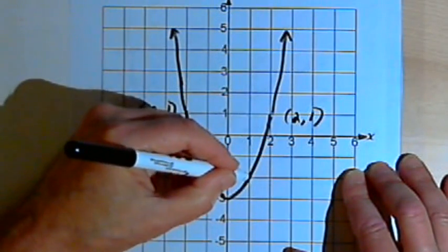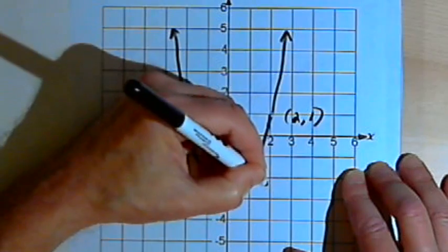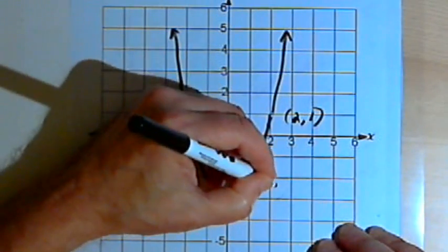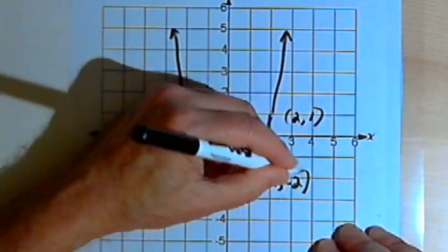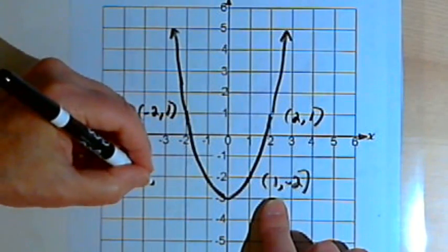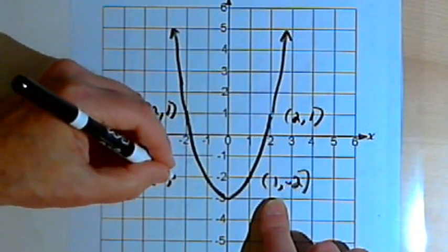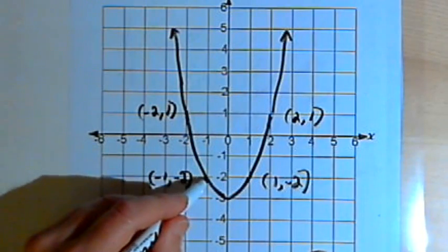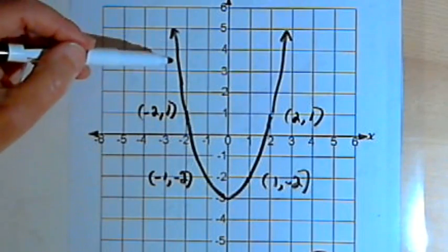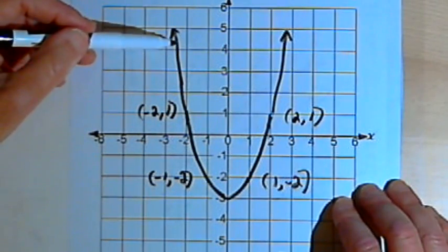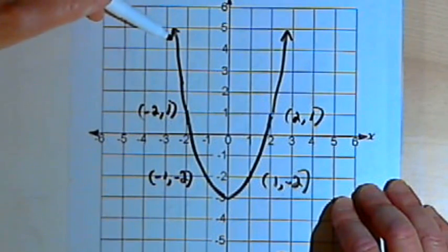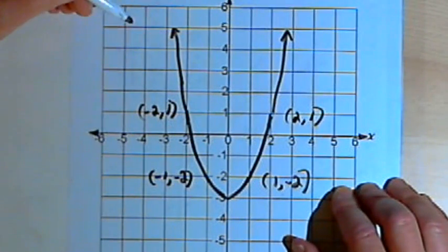That should also be a point on the other side of the graph, and that happens here. It would also happen with a point like 1 comma negative 2 — if I change the sign of the x-coordinate and make that negative 1 comma negative 2, we find that's a point on the other side of the graph. So if I can do that for every point on the graph, then this graph is symmetrical with respect to the y-axis. When we've got a graph like this and it's a function, we call it an even function.